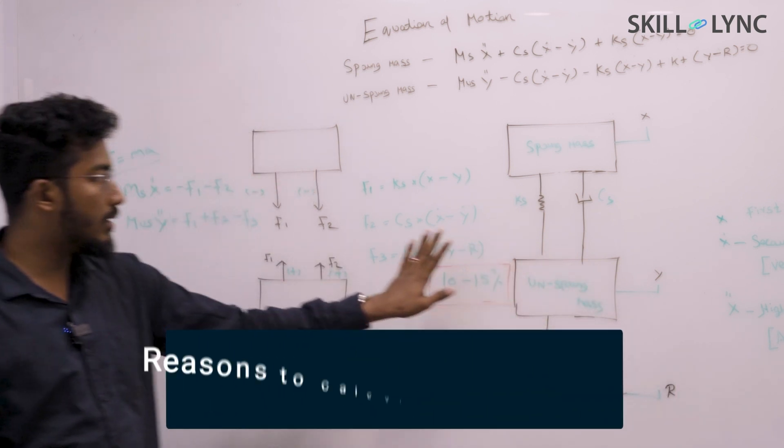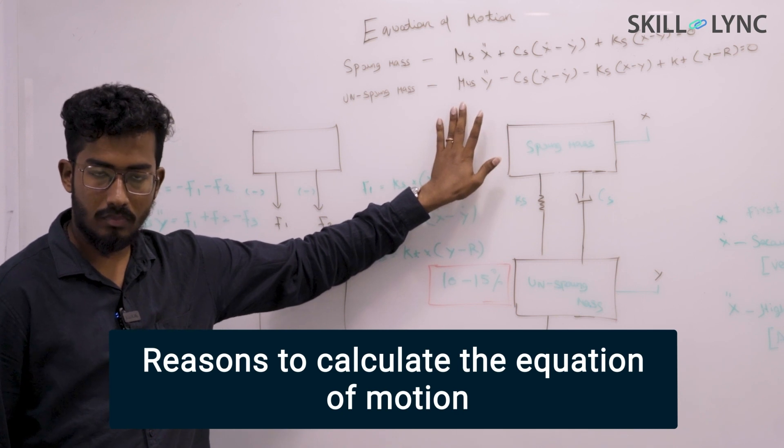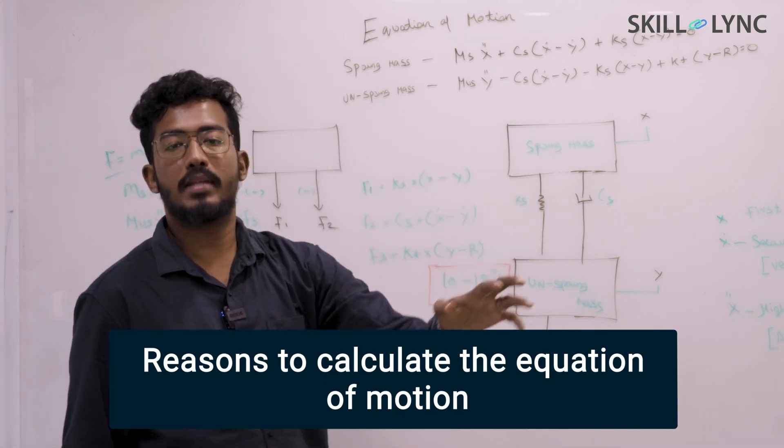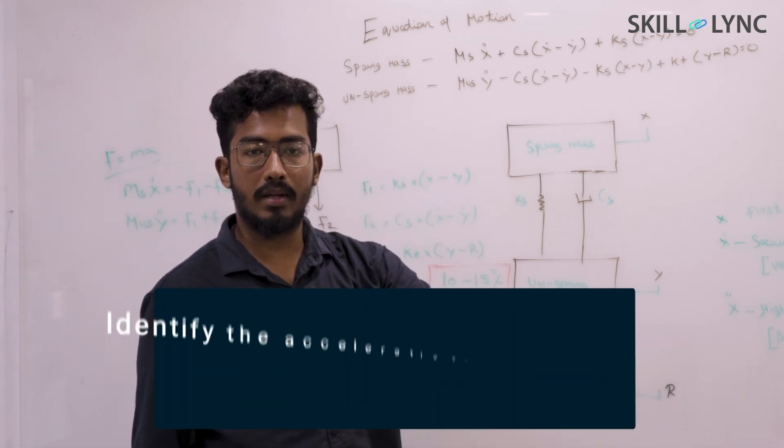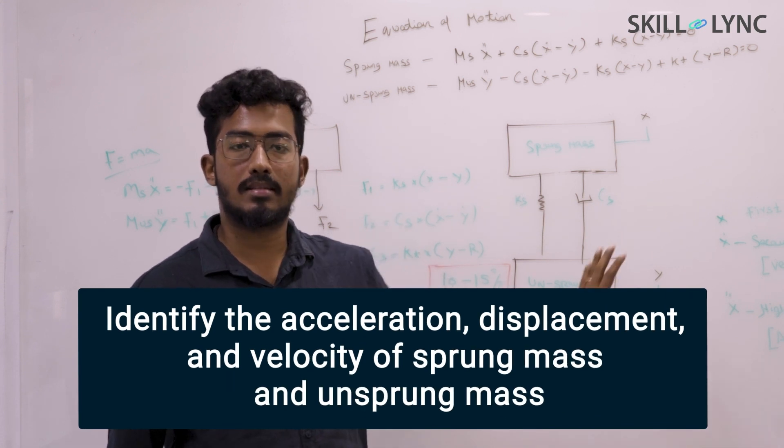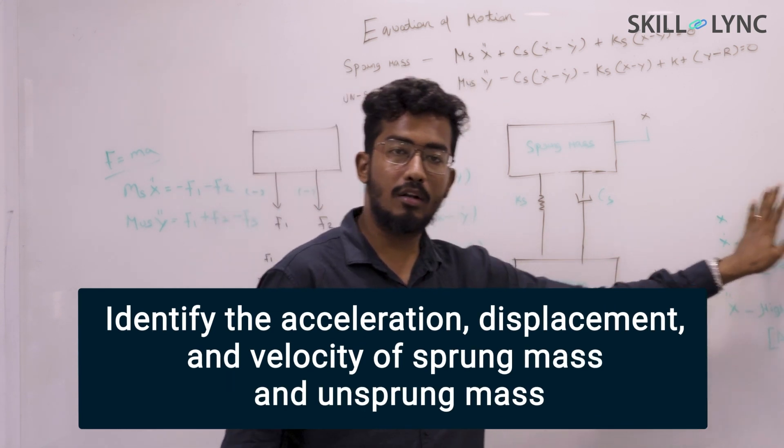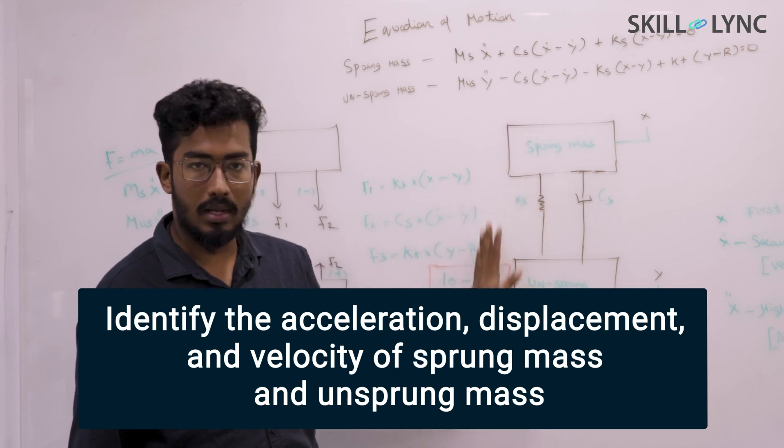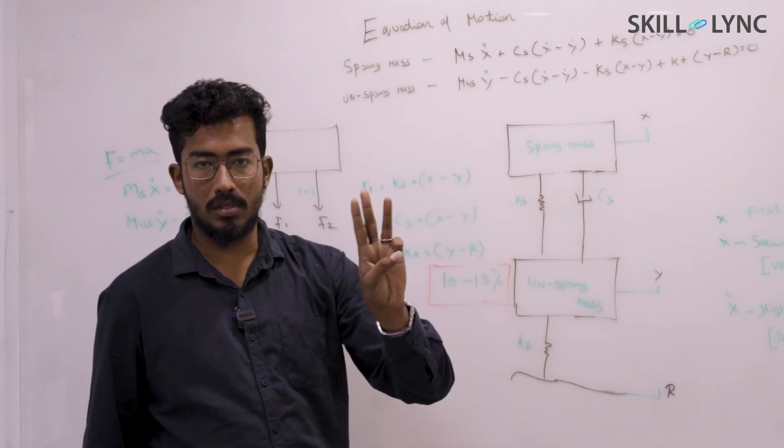The engineering concept that goes behind is to calculate and come up with the equation of motion. Why are we going to come with the equation of motion to identify and understand the system? At the end of the day, from the quarter car we are going to get only three variables.